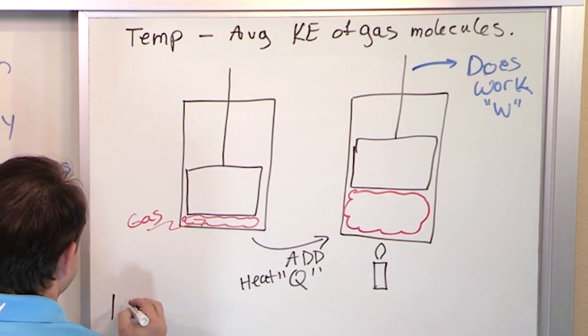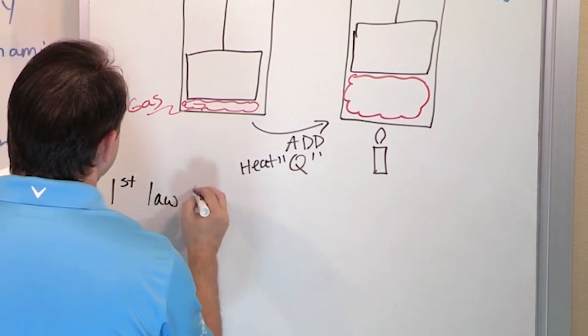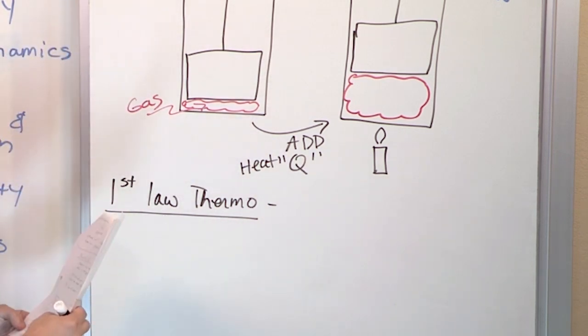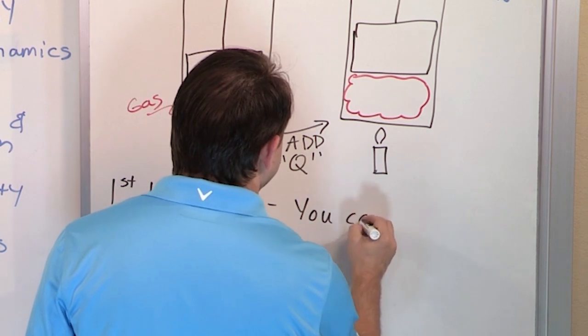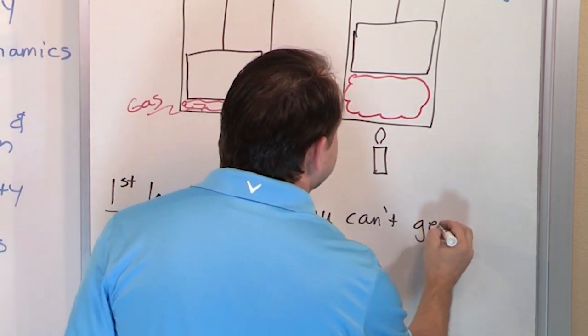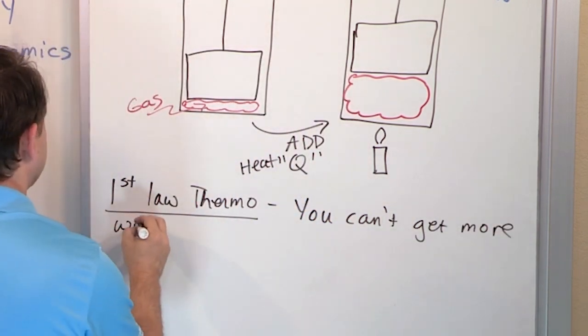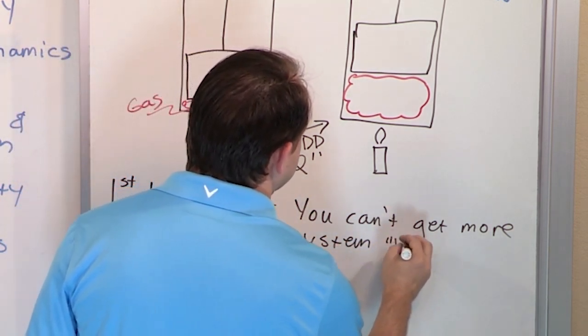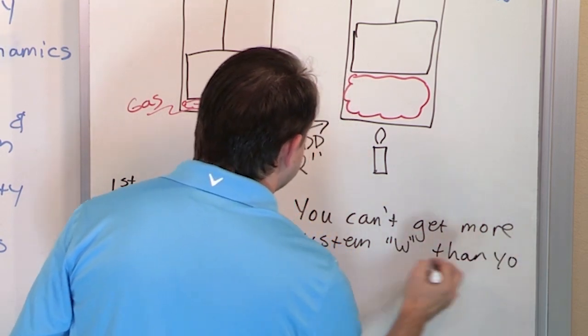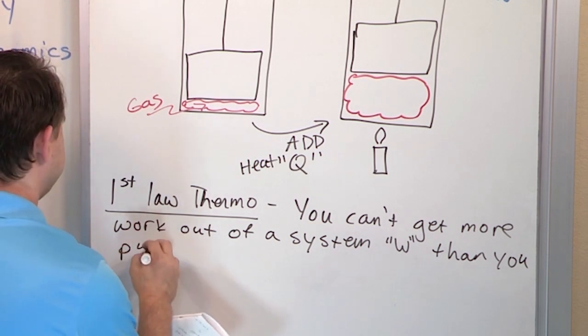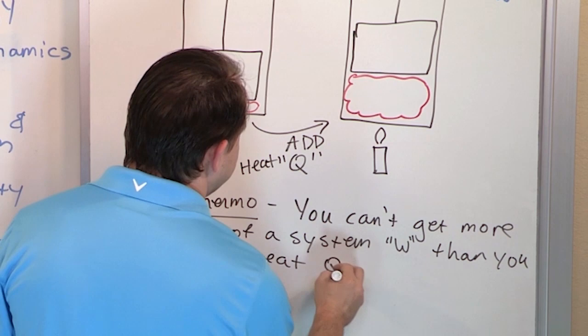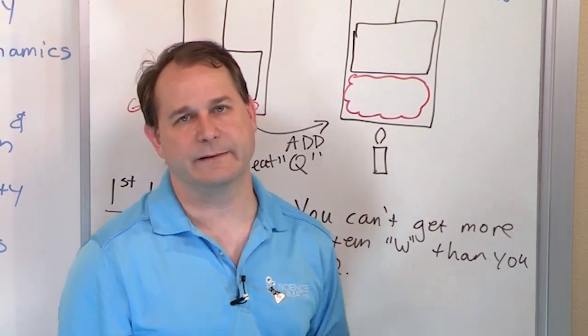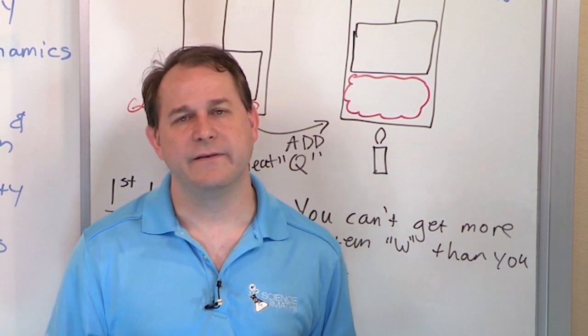The first law of thermodynamics - I'm not going to go too deep into this because we're going to have many, many discussions about this. But the first law of thermodynamics basically says you can't get more work out of a system W than you put in as heat Q. What it basically means is you can take some mechanism, any mechanism you want, add heat to the system and you'll get work out, but you will never get more work out than you put in.